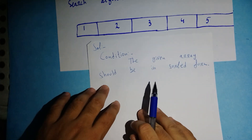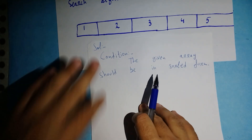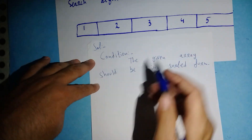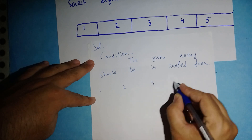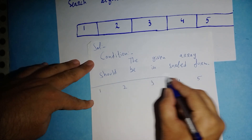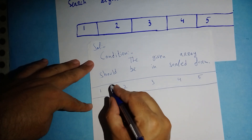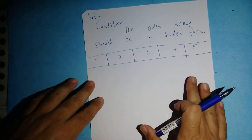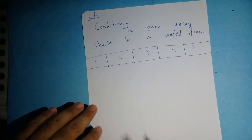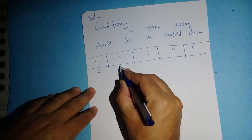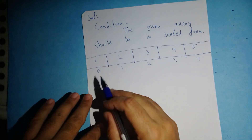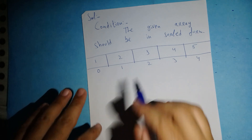Now, looking at the given array, I'm going to find out number five using interpolation search. The given array is already sorted, so I don't need to sort it. I'll write the array: one, two, three, four, five. There are five values and five indices: index zero, one, two, three, four.